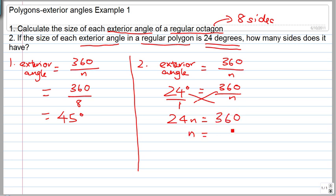The number of sides is therefore 360 divided by 24, which gives you 15 sides.